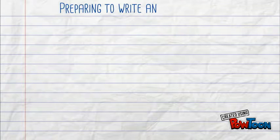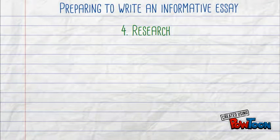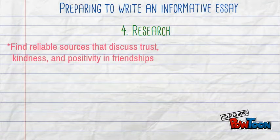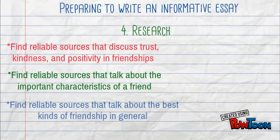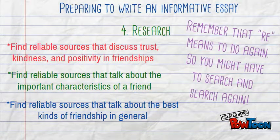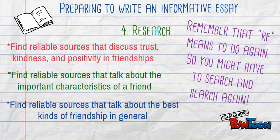Step four of writing an informative essay is to research. You must find reliable sources that prove your supporting details. Remember that 're-search' means to do again, so you might have to search again and again for these reliable sources, but don't give up.